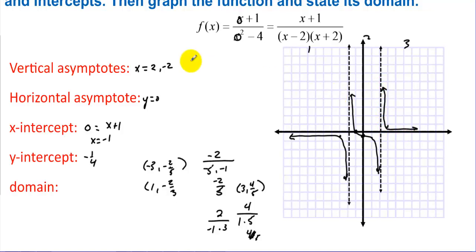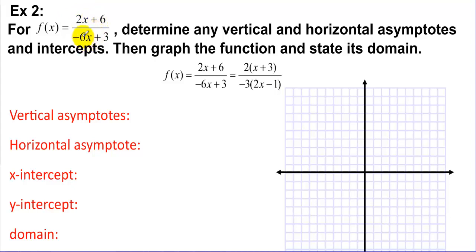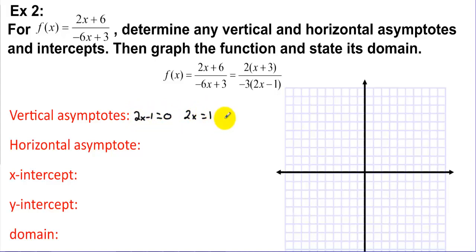That's what the graph looks like when verified with a graphing utility. In Example 2, for f(x) = (2x + 3) / (-6x + 3), we factor: pull a 2 out on top and -3 out on the bottom. For vertical asymptotes, we set the denominator factor 2x - 1 = 0, giving x = 1/2.